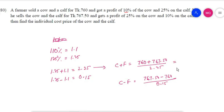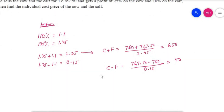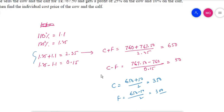The total price of 760 divided appropriately gives c plus f and c minus f values. C plus f is 65 divided by 2, and f equals the derived value. From the equations, F is solved as the cow and calf individual cost prices are determined by the simultaneous equation system.